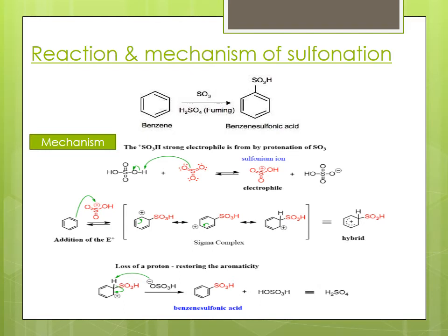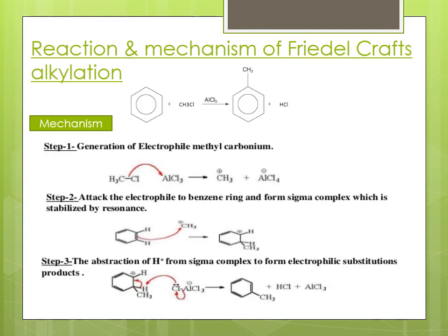Reaction and mechanism of Friedel-Craft alkylation: benzene reacts with an alkyl halide in the presence of aluminium chloride to form toluene. In this reaction, the alkyl halide reacts with aluminium chloride, which acts as a catalyst, to form the electrophile. Electrons on the chlorine are donated to the aluminium of aluminium chloride to form CH₃⁺ as the electrophile, which attacks on the benzene ring to form toluene.